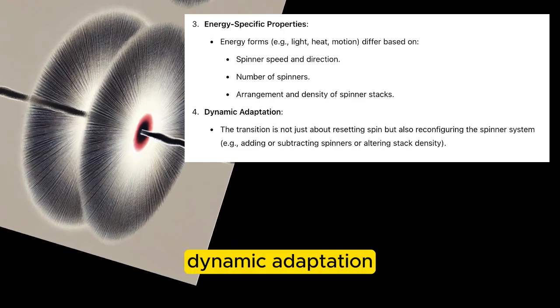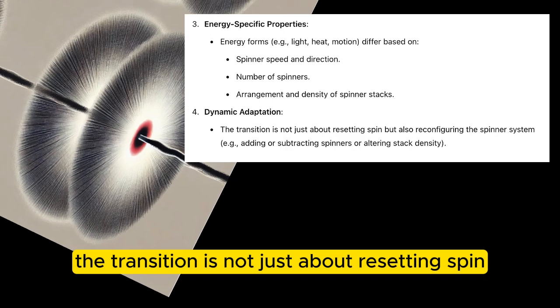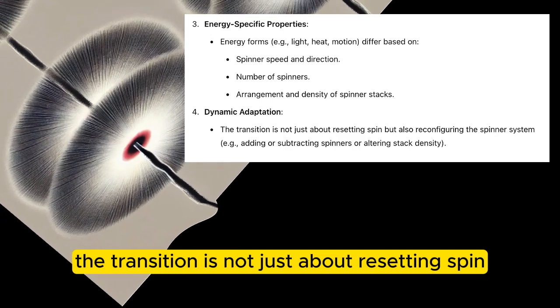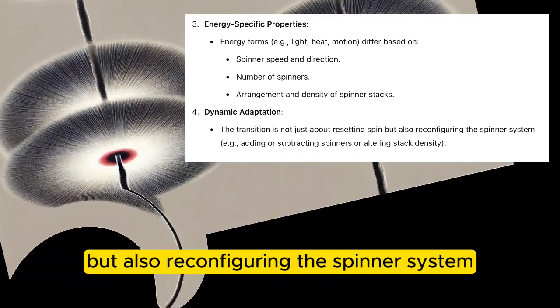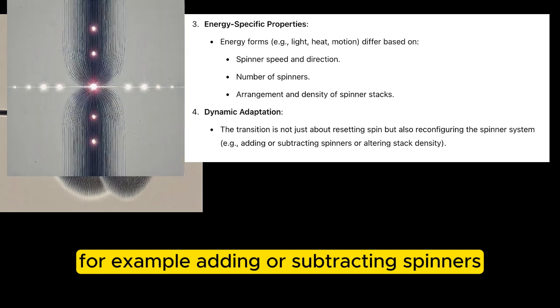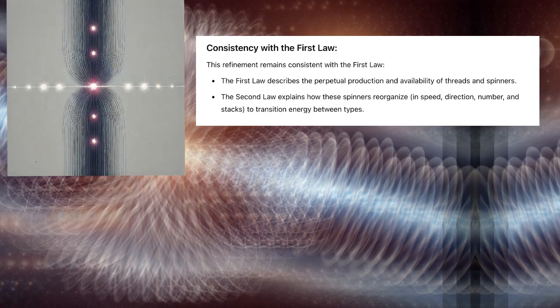Dynamic adaptation: the transition is not just about resetting spin, but also reconfiguring the spinner system — for example, adding or subtracting spinners, or altering stack density.